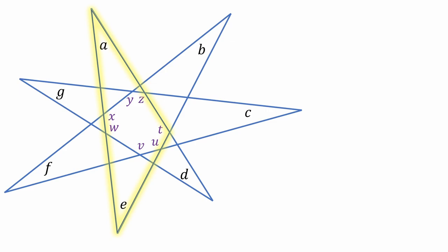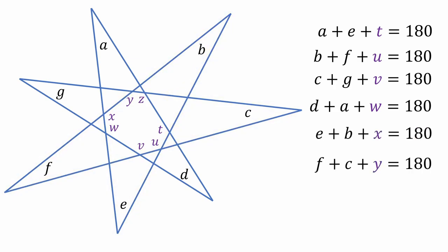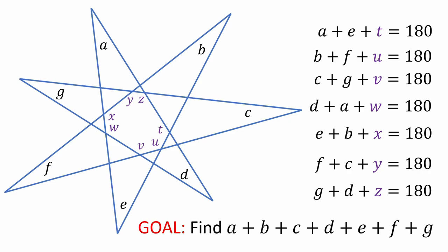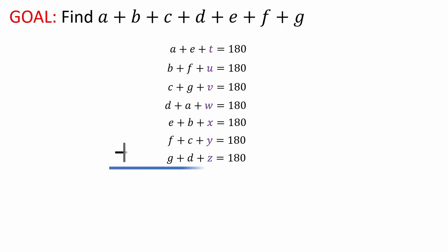From this highlighted triangle we get A + E + T = 180. Moving clockwise we can generate 6 more equations based on the other 6 isosceles triangles. Once again, our goal is to get the sum of all 7 angles. So let's focus on these 7 equations. Let's see what happens if we add them. We would get two copies of A through G, plus 7 interior angles of the heptagon, T through Z, all adding up to 7×180.